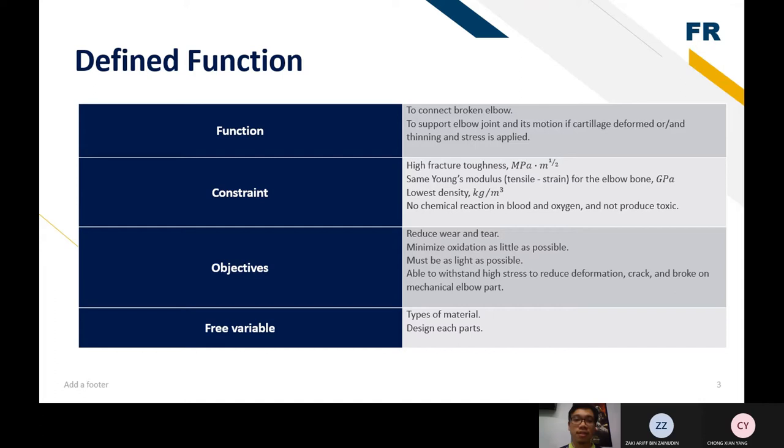While any toxic produced in our body must be as light as possible, able to withstand high stress to reduce deformation, crack, and broken on mechanical elbow parts. From the objectives, to fulfill the objectives, the constraint that we structured must be high pressure, that when a porosity or crack occurs over a long time like years of use, the material might resist any fracture or crack to worse crack. And then, same Young's modulus for the elbow bone, because the ultimate goal is to produce a product and proper material suitable for human body, lower density, and no chemical reaction in blood and oxygen and not produce any toxic.